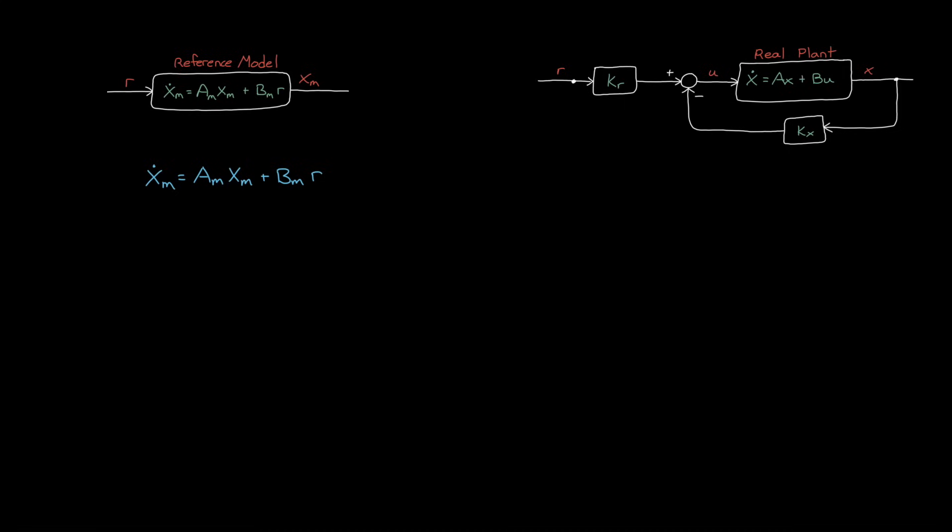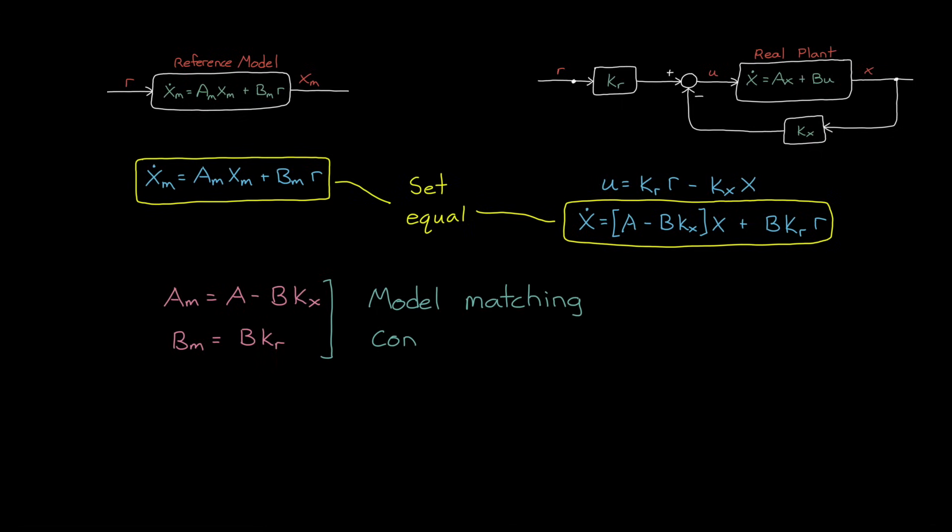Well, let's just take the simple approach where we solve for the state equations for both the reference model and the closed loop system, and then set them equal to each other. And now by setting the state and input matrices equal, we get the model matching conditions. Therefore, all we need to do is solve for KX and KR that make these two equations true.